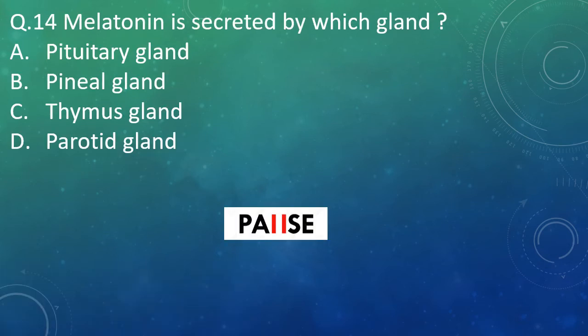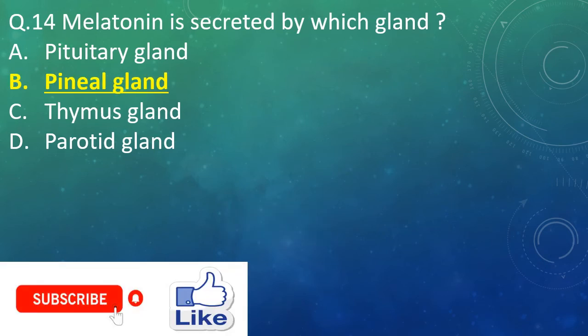Question 14: Melatonin is secreted by which gland? Option A: pituitary gland. Option B: pineal gland. Option C: thymus gland. Option D: parotid gland. And the right answer is Option B — pineal gland.